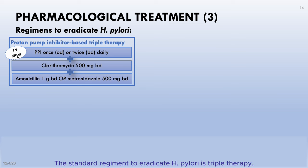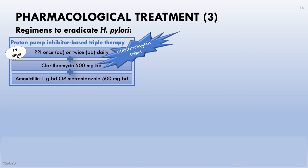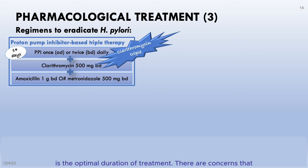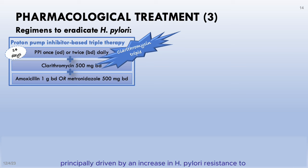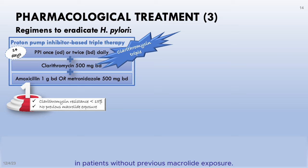The standard regimen to eradicate H. pylori is triple therapy consisting of a PPI, clarithromycin, and amoxicillin or metronidazole in a twice-daily simultaneous course — referred to as the clarithromycin triple protocol. A Cochrane meta-analysis concluded that 14 days is the optimal duration of treatment. There are concerns that this regimen is losing efficacy in some areas, principally driven by increased H. pylori resistance to clarithromycin and amoxicillin. However, triple therapy remains first-line where H. pylori clarithromycin resistance is less than 15% and in patients without previous macrolide exposure.